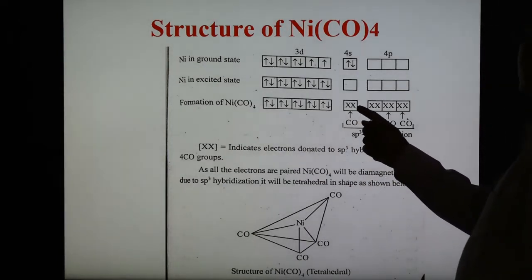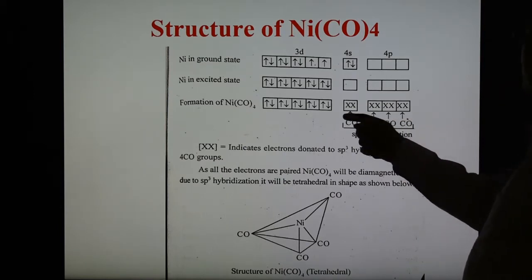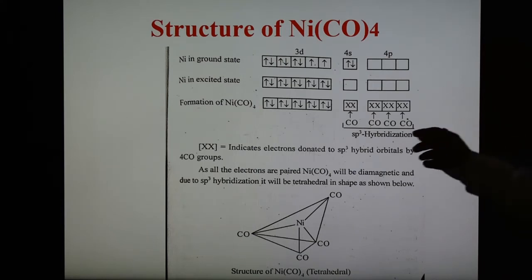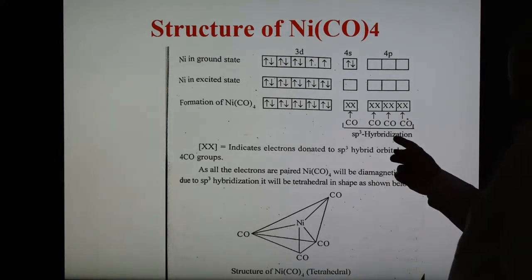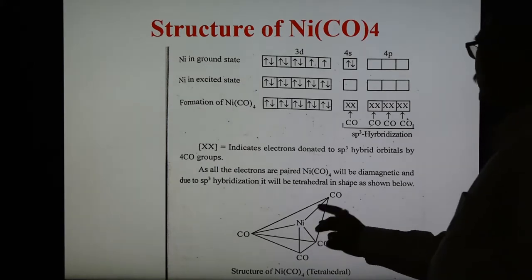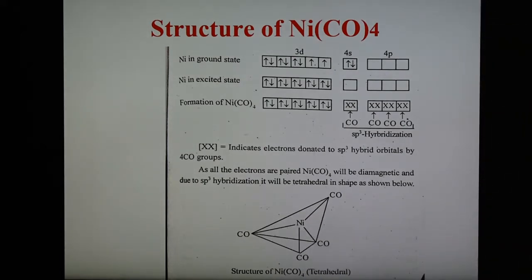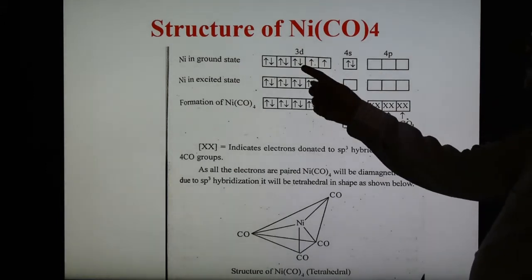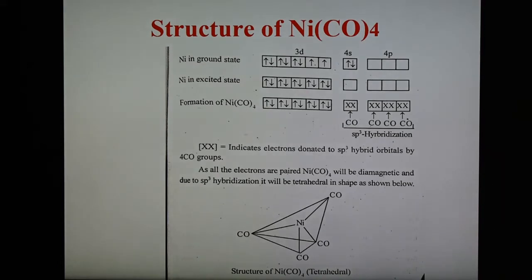These vacant orbitals accept 4 electron pairs from the CO carbonyl groups. Carbonyl has a lone pair which is donated to the vacant orbital, and the metal accepts 4 electron pairs. The hybridization is sp3. The electrons donated by sp3 hybrid orbital of carbonyl groups form 4 dative coordinate bonds. Because of sp3 hybridization, the shape of nickel tetracarbonyl is tetrahedral with a bond angle of 109.5 degrees.